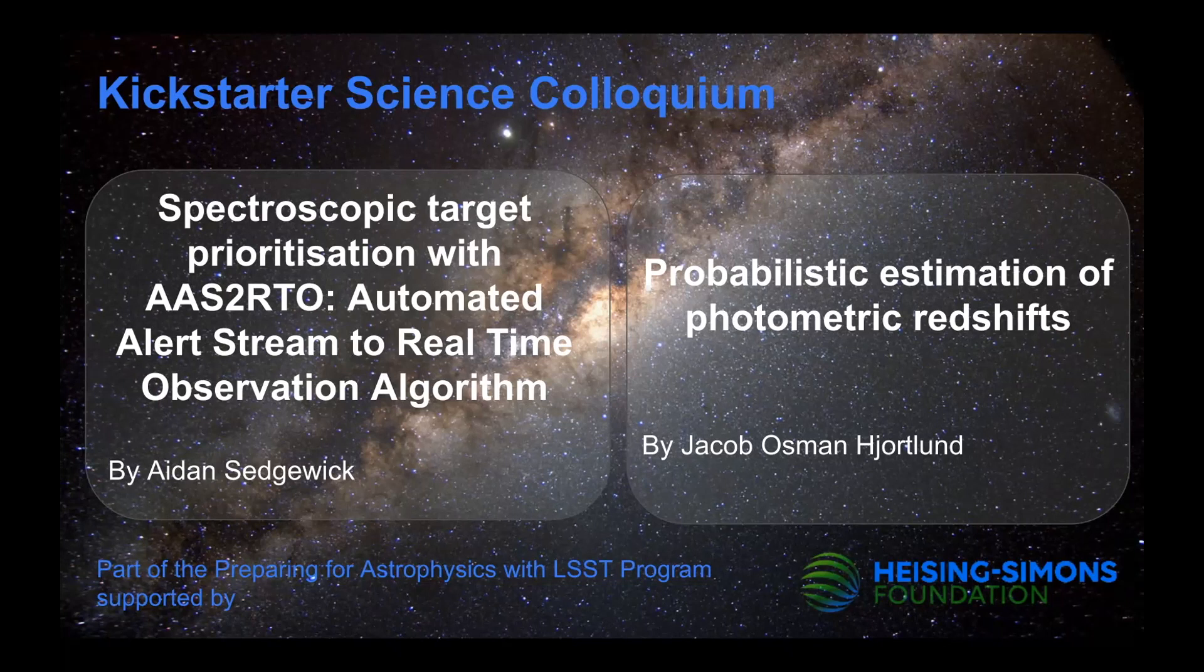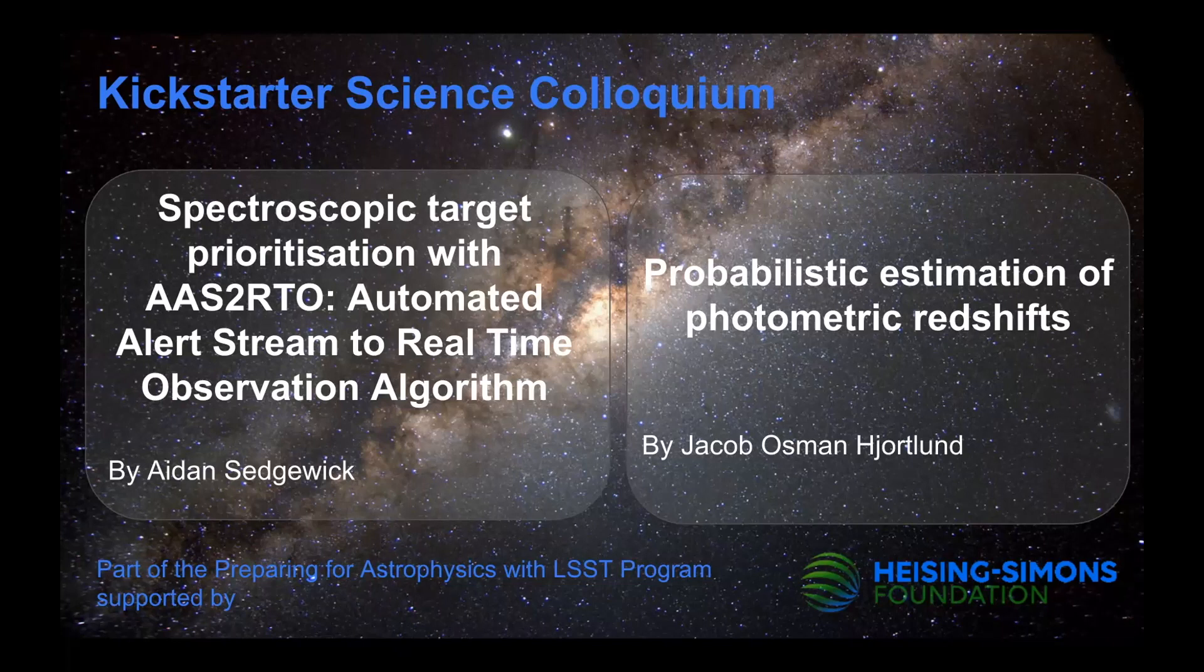For today's colloquium, I'm delighted to welcome Aidan Sedgwick and Jakob Hjortlund. With the firehose of alerts that LSST is expected to produce, an essential tool for deriving useful science is software that can help us select targets we are most interested in and do it in real time. Aidan will describe a package he's developed to do just that. Jakob specializes in techniques to measure redshifts to extragalactic objects using just photometric measurements that LSST will produce. This is vital for characterization of many objects since the survey will reach magnitudes well beyond what we can measure with spectroscopy.